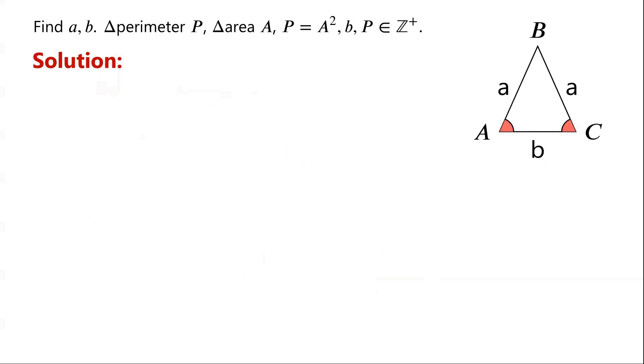We know that the perimeter of a triangle equals the sum of the lengths of the triangle. So the perimeter P equals 2A plus B.